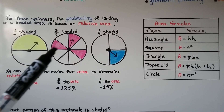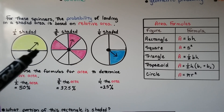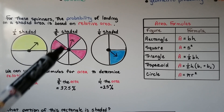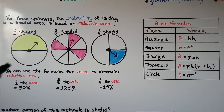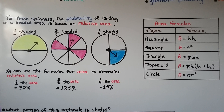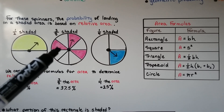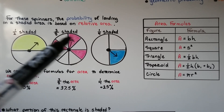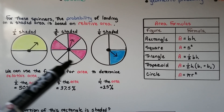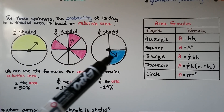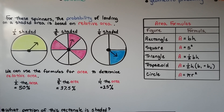Here we have three spinners — you can spin the little arrow around. For these spinners, the probability of landing on a shaded area is based on relative area. Here, half is shaded. Here, three-eighths is shaded — there are eight parts and three of them are shaded. And here, one-fourth is shaded.